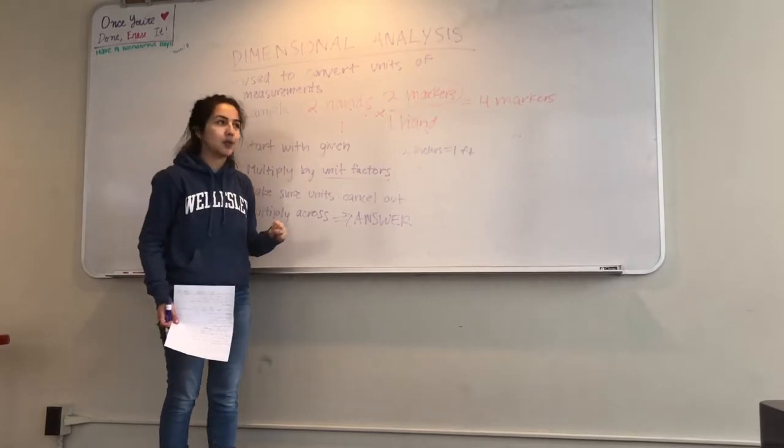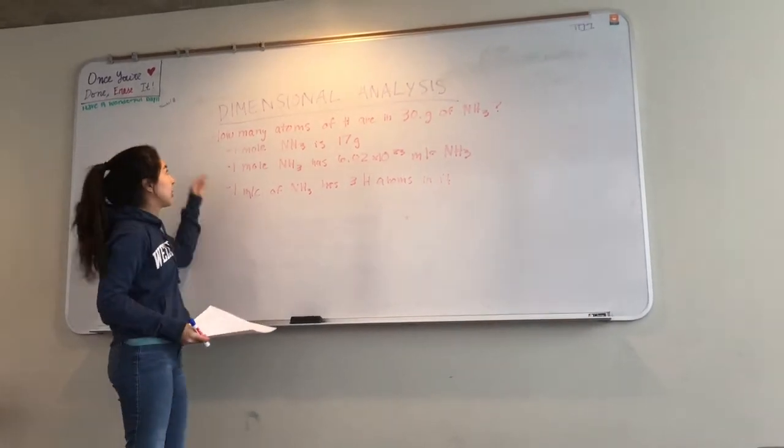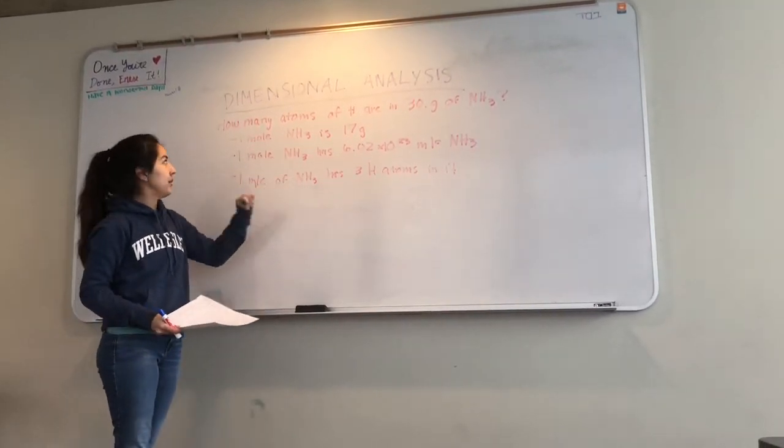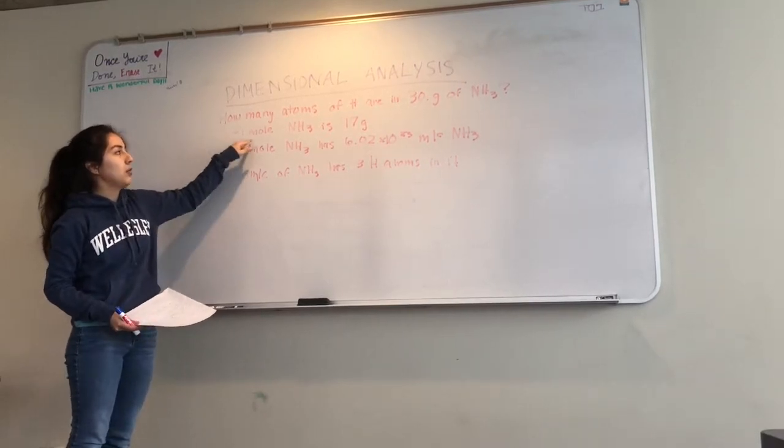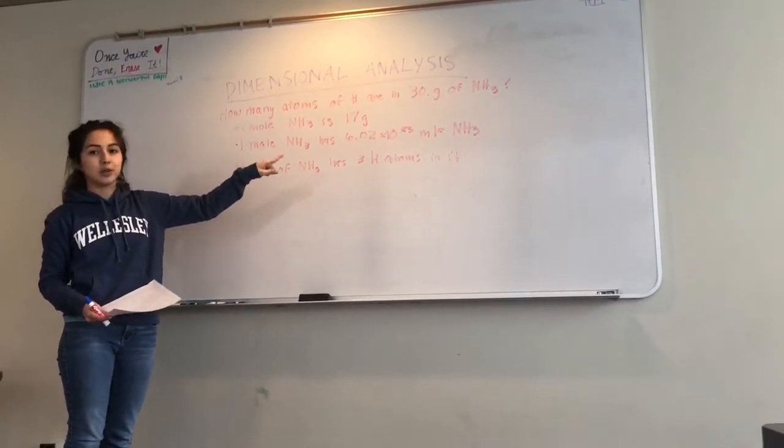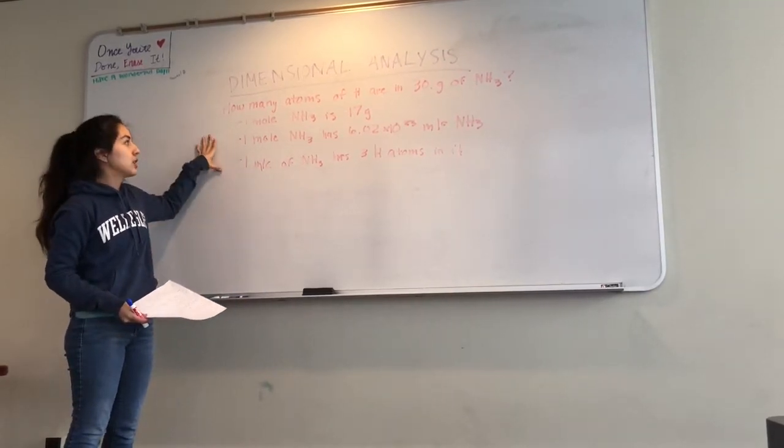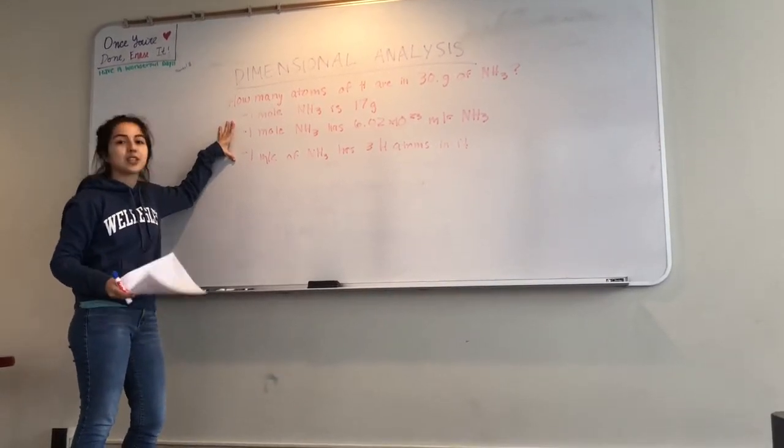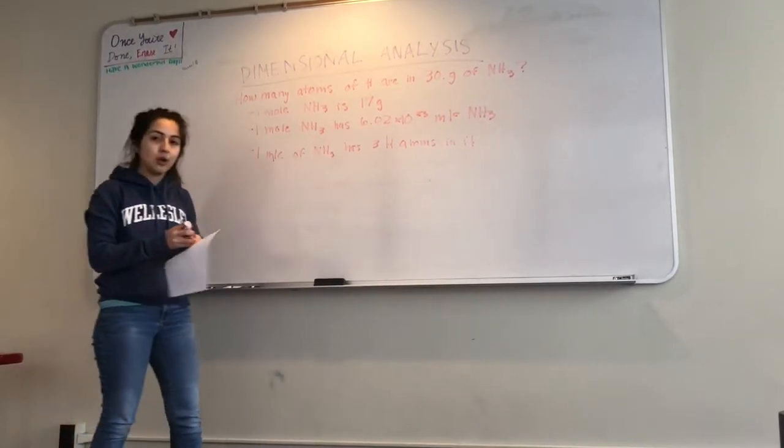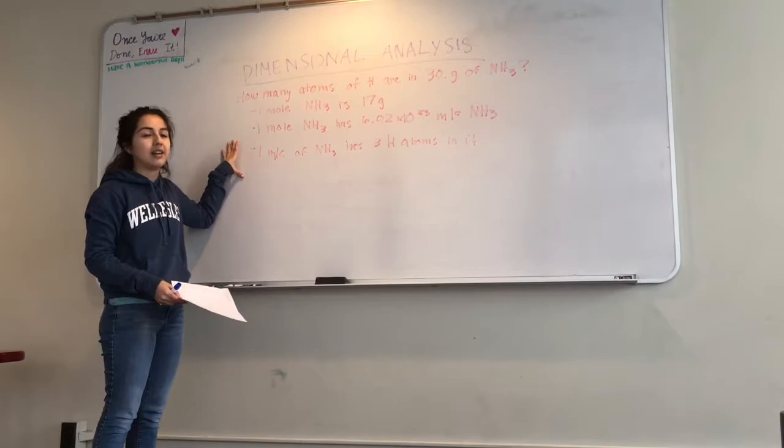Let's do a little bit of a trickier example so that we can practice a little bit more. So the next problem that we're going to work through together really has to do with chemistry. So the question is, how many atoms of hydrogen are in 30 grams of ammonia? That's NH3. So I have a few givens for you. I'm giving you that one mole of ammonia is 17 grams. One mole of ammonia has 6.02 times 10 to the 23 molecules of ammonia. And one molecule of ammonia has three hydrogen atoms in it. So what are these things that I'm giving you? What did I just read out? That's right. These are unit factors that you can use in your dimensional analysis to get the answer that you want. So let's work through this together so that we can get the answer. And you'll see how you can use dimensional analysis for things that seem really complicated to get your answer.